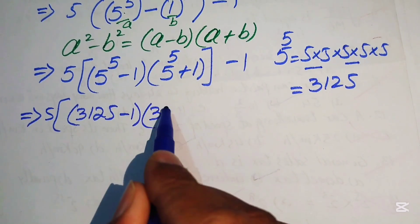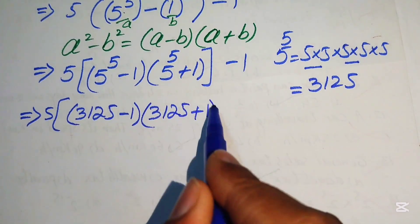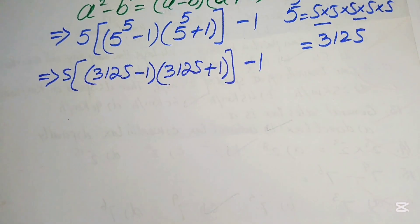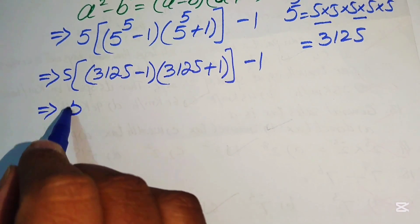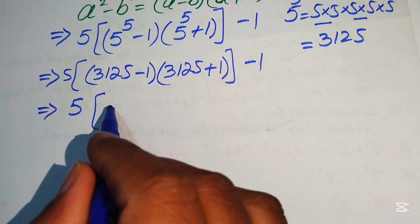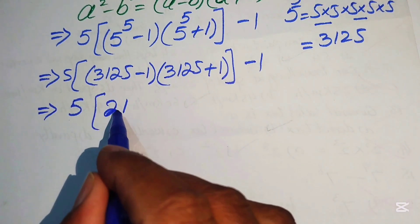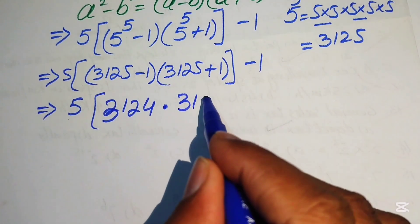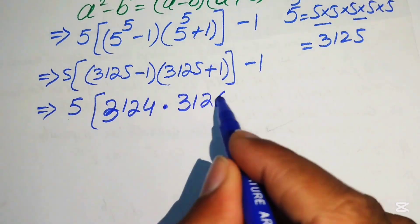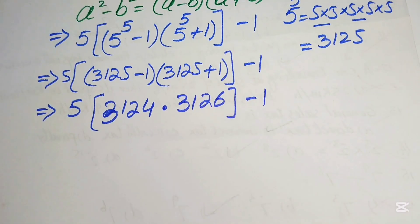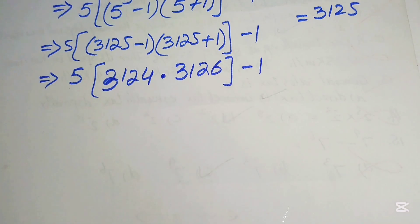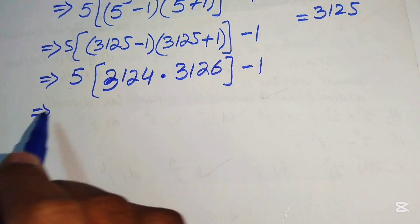We replace 5 to the power of 5 with 3125. So the expression becomes 5 times (3125 minus 1)(3125 plus 1) minus 1, which is 5 times 3124 times 3126, minus 1. To multiply these two numbers easily, we rewrite them in a useful form.